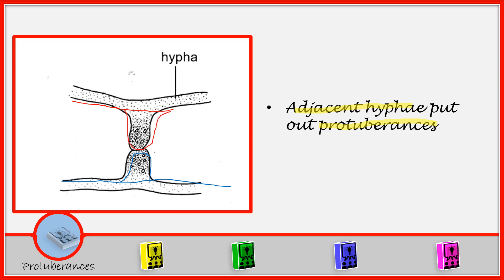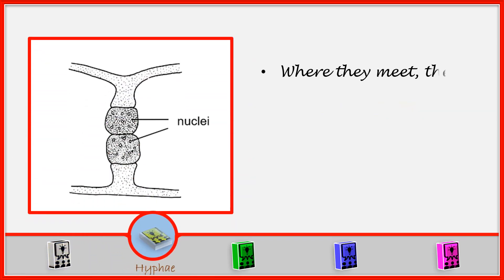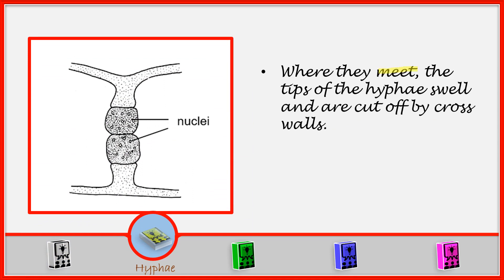Now they are going to undergo sexual reproduction. When they meet, the tips of the hyphae swell and are cut off by cross walls. So when they meet here, you are seeing that the end is swelling. And as it swells, then they are going to be cut off by a cross wall. Here the cross wall cuts them off.